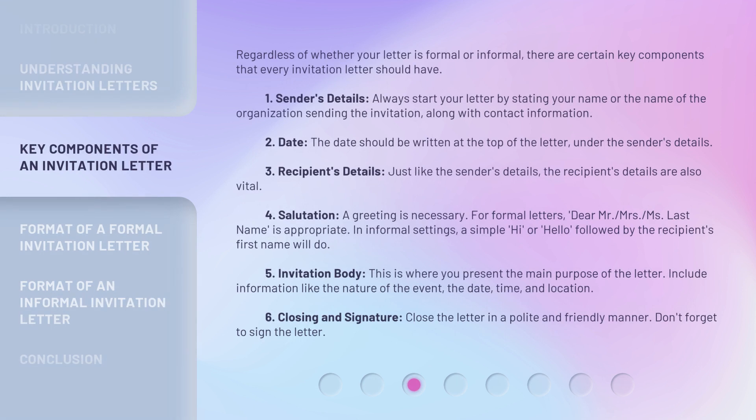Regardless of whether your letter is formal or informal, there are certain key components that every invitation letter should have. 1. Sender's Details: Always start your letter by stating your name or the name of the organization sending the invitation, along with contact information. 2. Date: The date should be written at the top of the letter, under the sender's details. 3. Recipient's Details: Just like the sender's details, the recipient's details are also vital. 4. Salutation: A greeting is necessary. For formal letters, 'Dear Mr. or Mrs.' followed by the last name is appropriate.